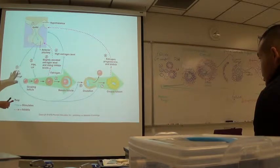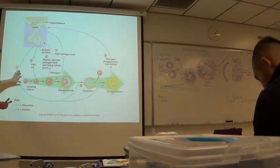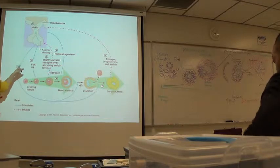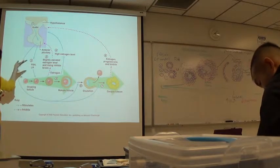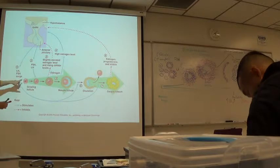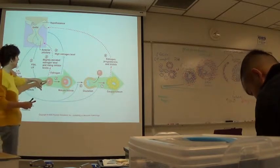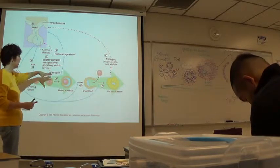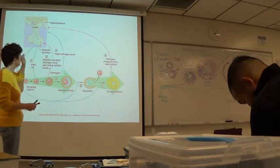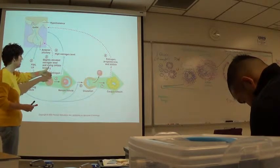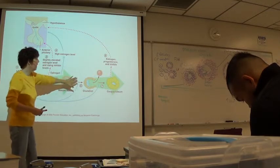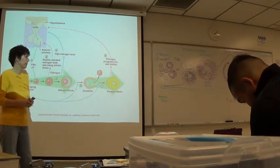LH and FSH start to increase because GnRH levels have increased after the negative feedback from the end of the cycle. With increasing numbers of follicular cells, estrogen levels are going to rise. The moderately high estrogen level results in LH being secreted, and then we have ovulation.